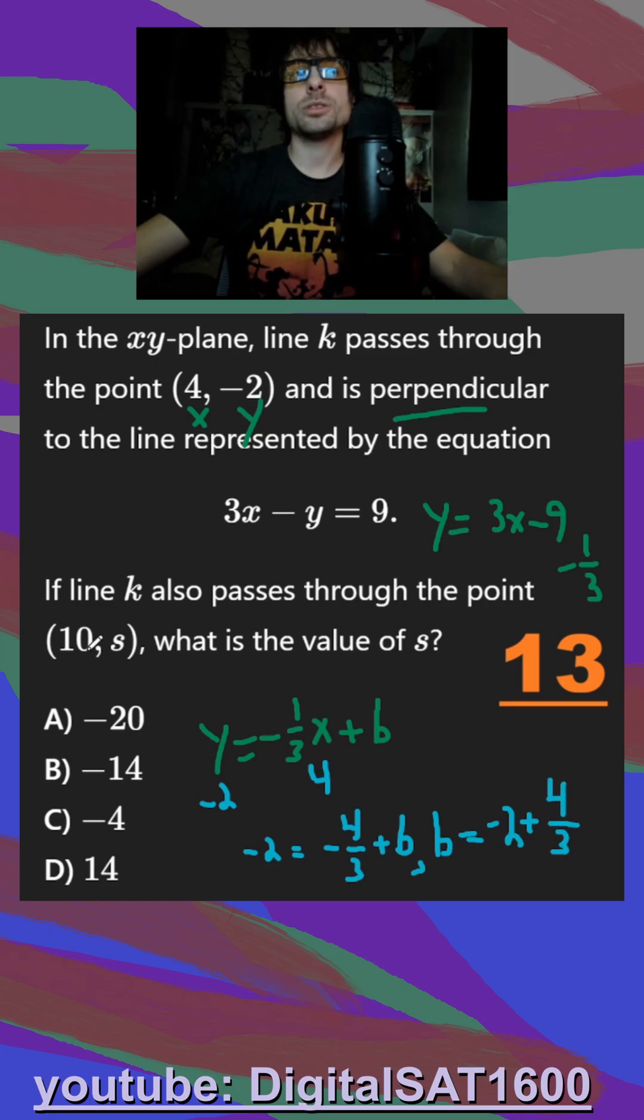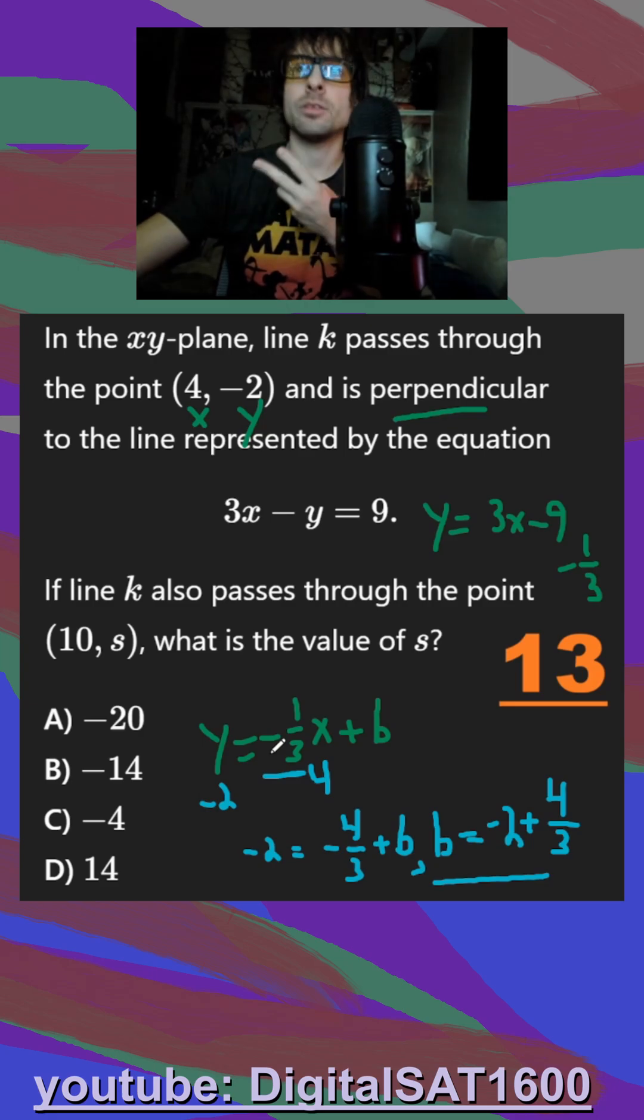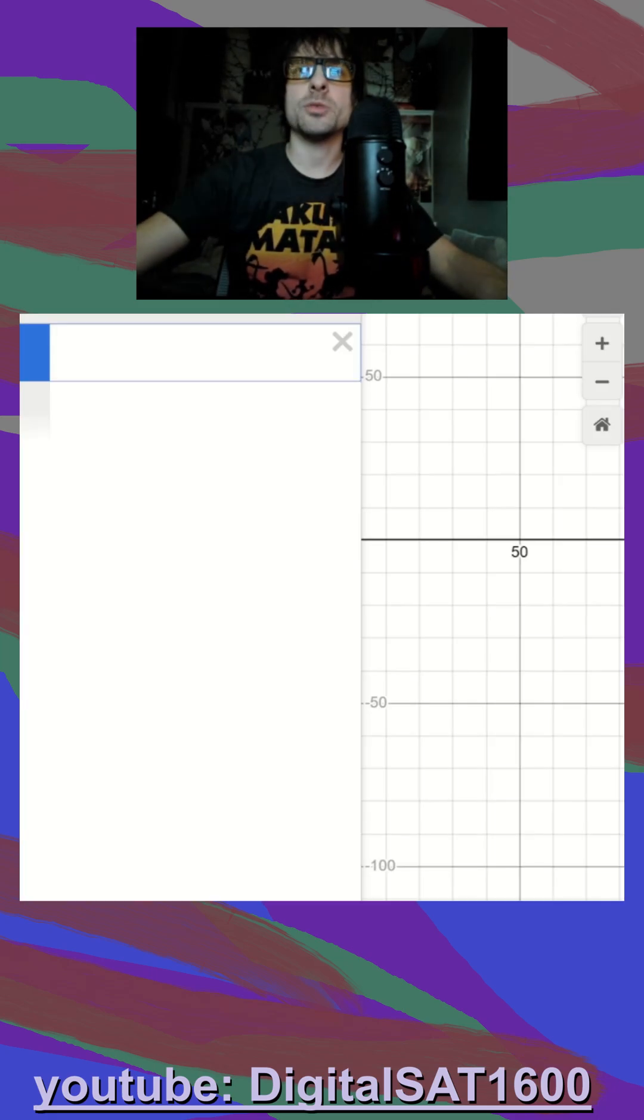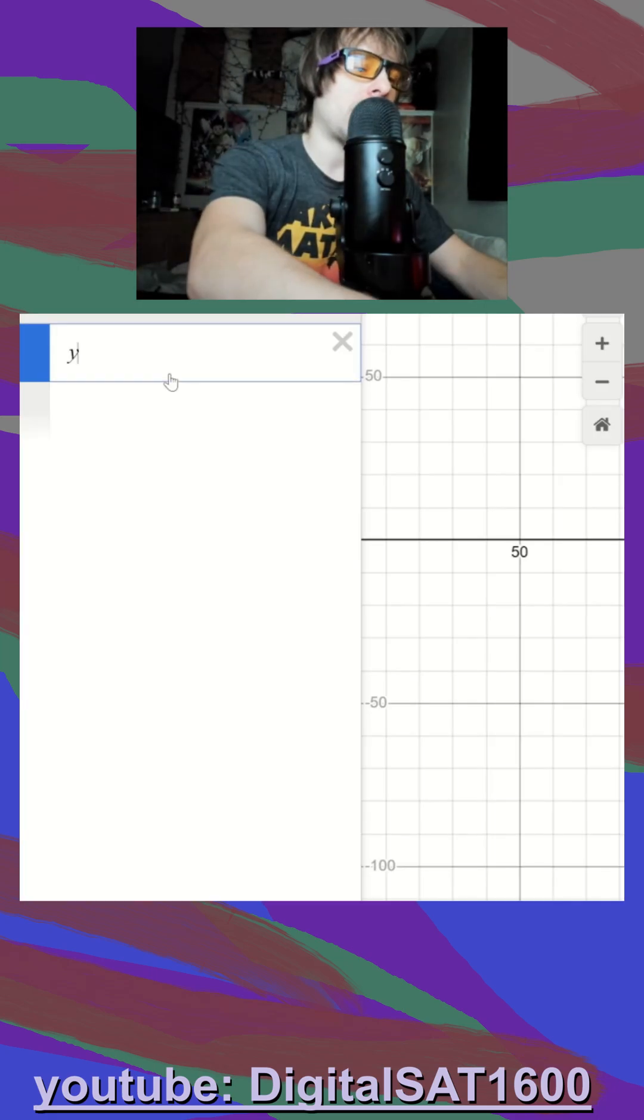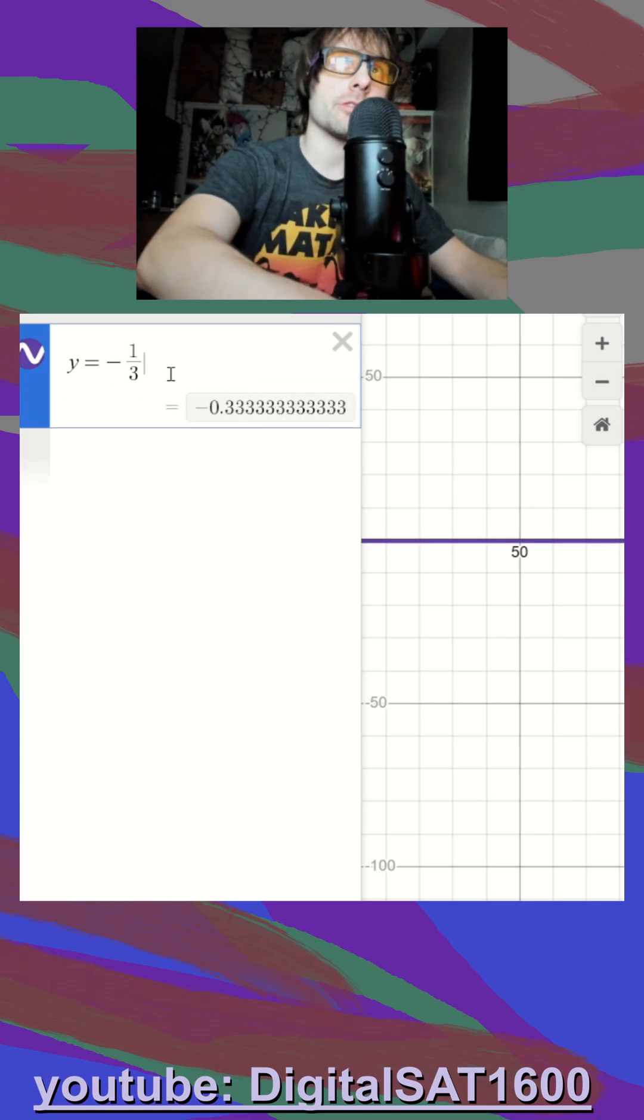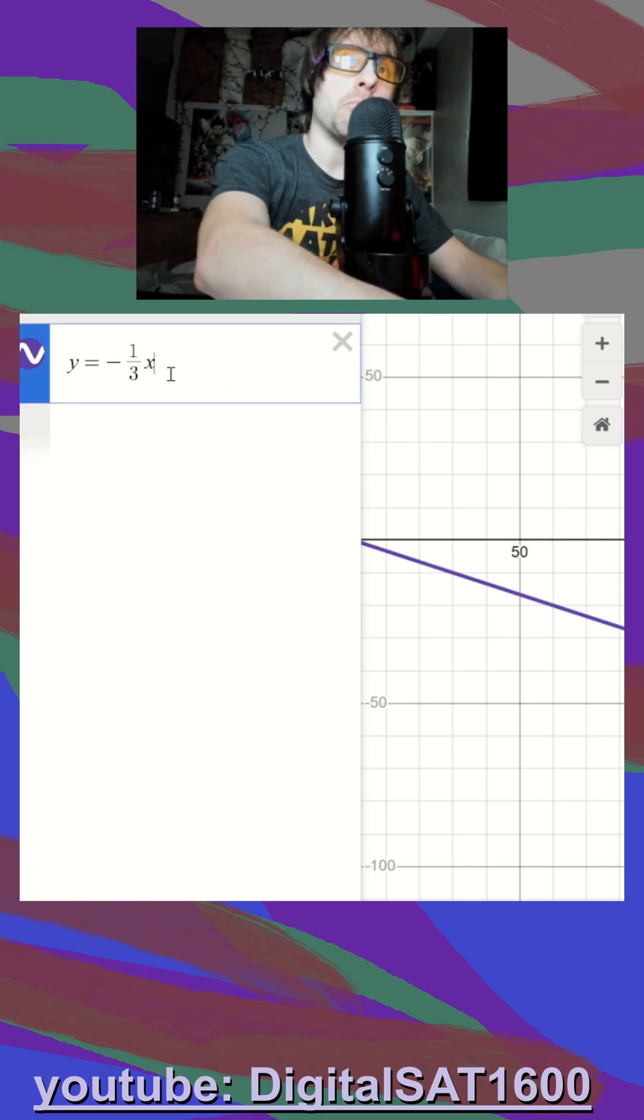They say if line k also passes through this point, what's the value of s? Well, we can just plug this equation into Desmos now. We have the slope, we have the y-intercept. Let's open up Desmos, and let's type in y is equal to negative 1 third x minus 2 plus 4 thirds.